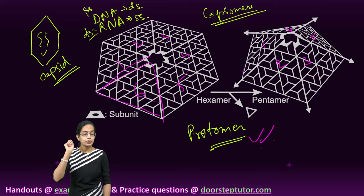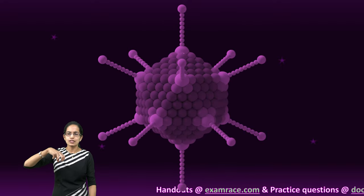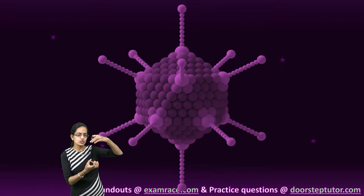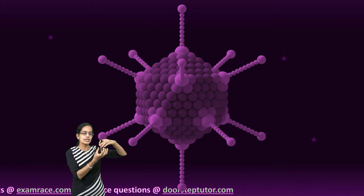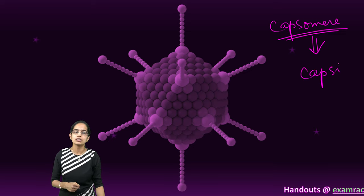These are protomers. Now these protomers combine together to form a capsomere. These capsomeres are similar to a lego block. So as you build on the lego blocks, you start to join them. What would happen, there would be a sequence, a structure that would be built, and that would be capsomeres. And these capsomeres further assemble to form the capsid which is the protein layer.